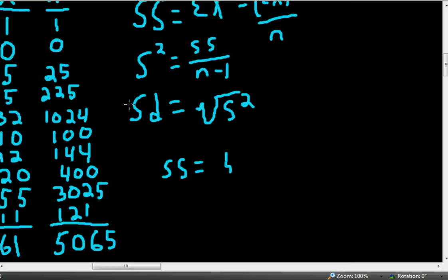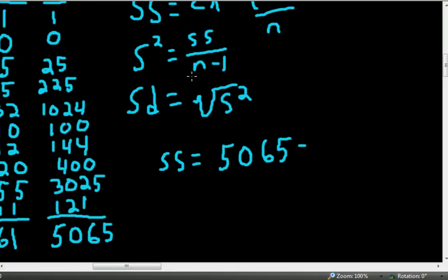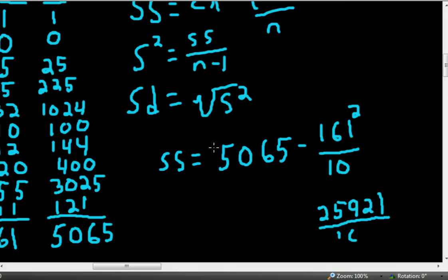So we have sum of the squares equals 5065 minus 161 squared. Don't forget that we need to square that over n, which here is 10 because there are 10 scores.